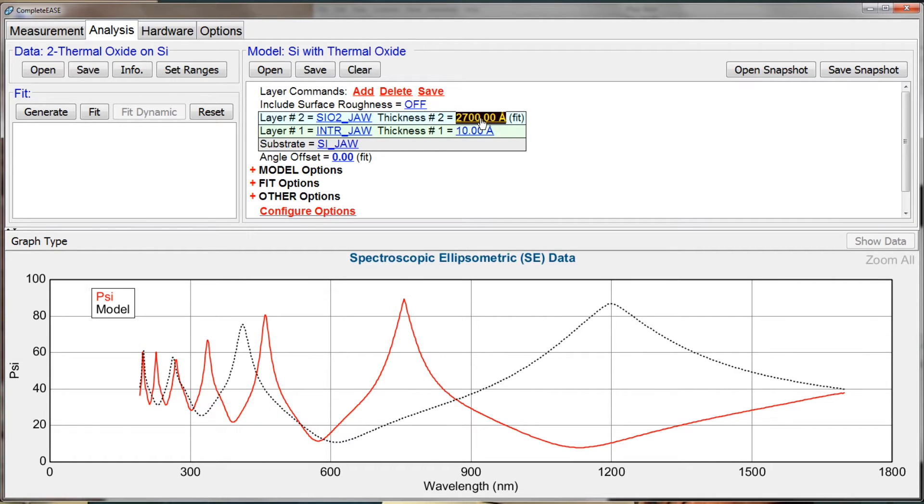Now notice what's happening. As I increase the thickness of the oxide here, it's also updating the graph to show me the number of peaks and valleys in my data. And if I keep rolling to the right thickness, somewhere near about 5,000...